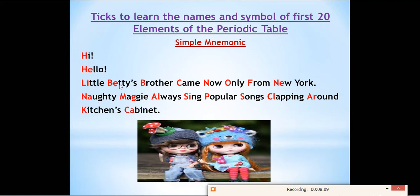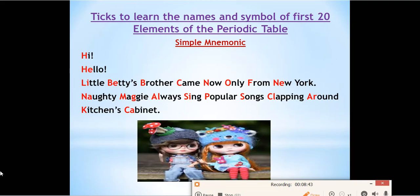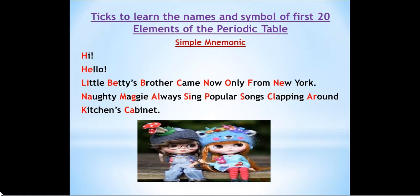So the complete sequence is: hydrogen, helium, lithium, beryllium, boron, carbon, nitrogen, oxygen, fluorine, neon, sodium, magnesium, aluminium, silicon, phosphorus, sulfur, chlorine, argon, potassium, and calcium. You just need to remember the mnemonic and you can derive all the elements and their symbols. 'Hi Hello, little Betty's brother came now only from New York. Naughty Maggie always sings popular songs, clapping around kitchen's cabinet.'